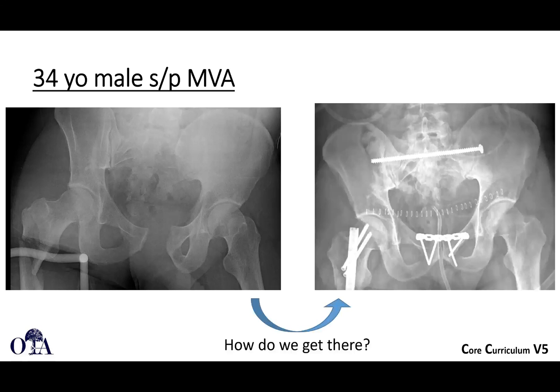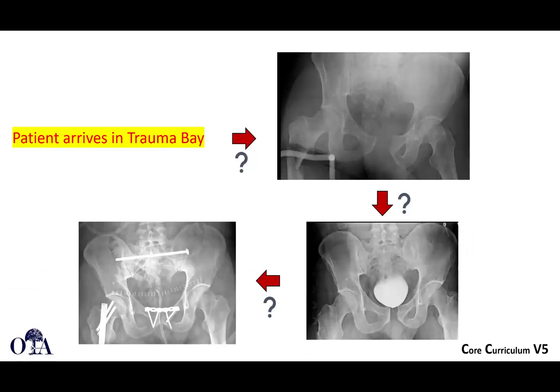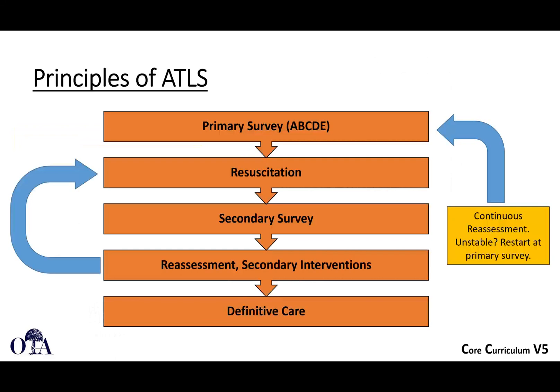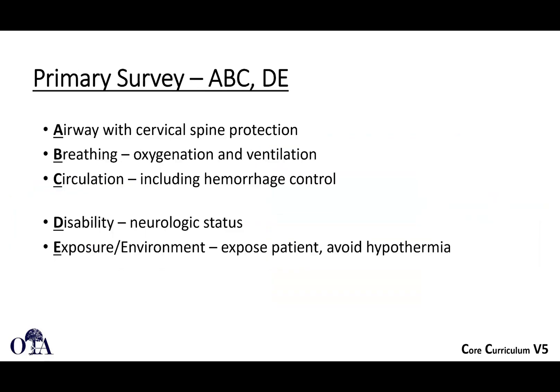Here's an example: a 34-year-old male in a motor vehicle accident. We'll discuss how a patient goes from the initial injury x-ray to definitive treatment. A patient arrives in the trauma bay, you get the initial x-ray, and eventually reach the definitive fixation images. There are many steps in between. It starts with ATLS: primary survey, resuscitation, secondary survey, reassessment, continued resuscitation, and if the patient is unstable, restart the primary survey before reaching definitive care.